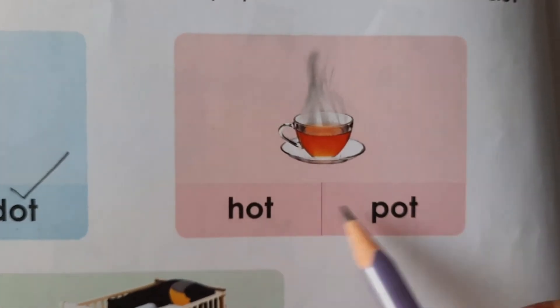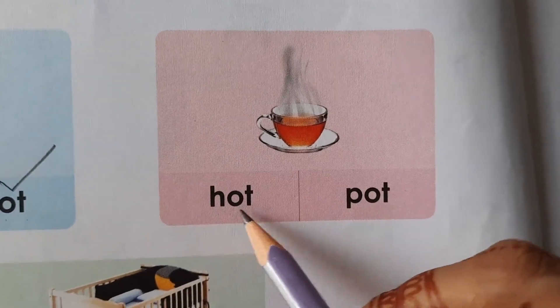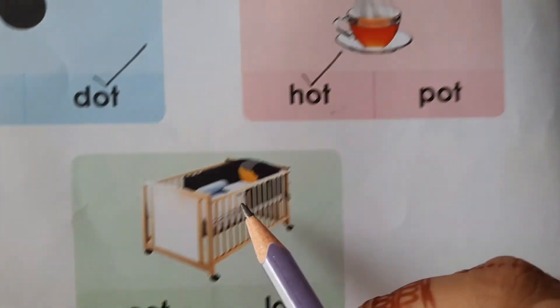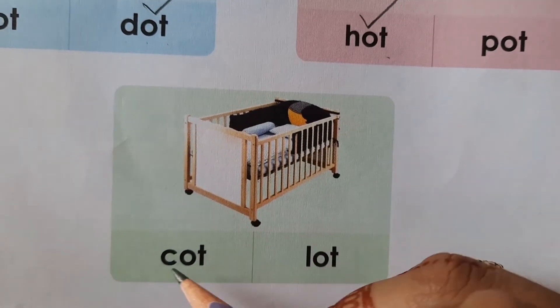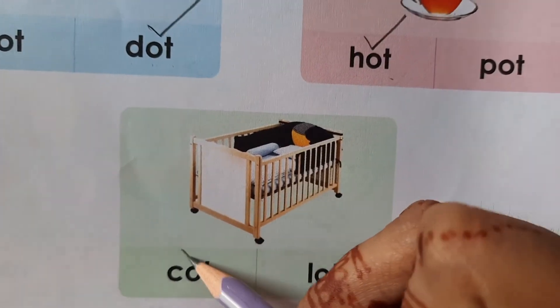Next, is this a 'cot' or 'lot'? This is a cot. C-o-t. Cot.